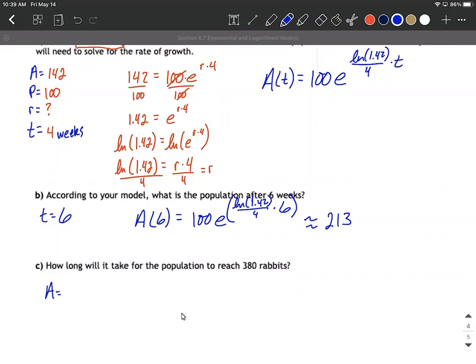And then one last follow-up question here, how long will it take for the population to reach 380 rabbits? So how long, that's telling us we don't know what our time frame is, we don't know what t is, but we do know what it grows up to be, the accumulated amount A is going to be 380. So we're going to use our same formula that we've set up here in part a except for we're going to plug 380 in on the left hand side and then try to solve for t. So 380 equals 100 e raised to the natural log of 1.42 divided by 4 times t.